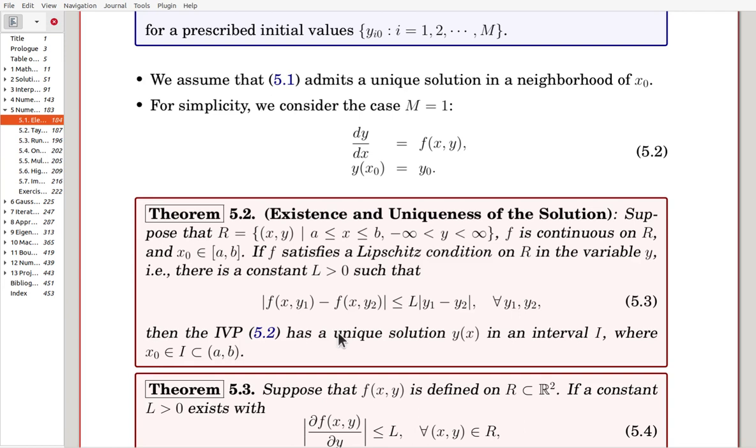So, existence and uniqueness is guaranteed only in a local interval. However, once these conditions are satisfied for all the domain a to b, then eventually we can say that the solution exists uniquely over the whole domain.